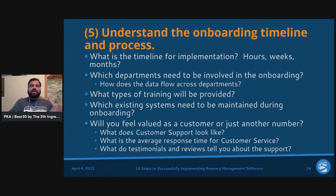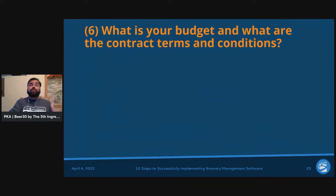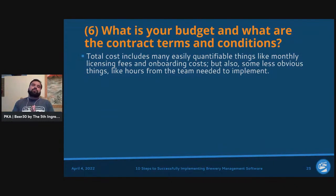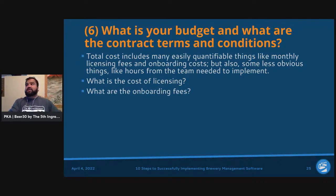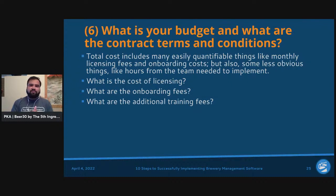Step number six: what is your budget and what are the contract terms and conditions? Total cost includes many quantifiable things like monthly licensing fees and onboarding costs, but also less obvious things like staff hours needed to implement. Key questions: what is the cost of licensing — per user, unlimited users? What do onboarding fees look like — per session, flat amount, or included in the monthly fee? Are there additional training fees after the initial sessions?